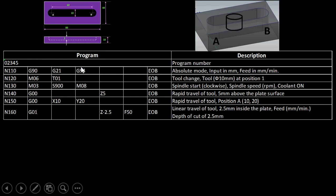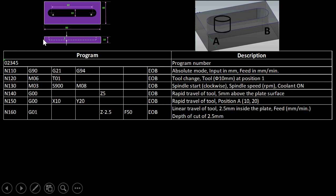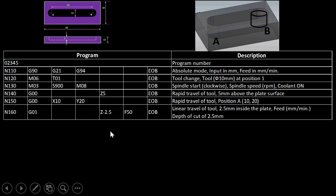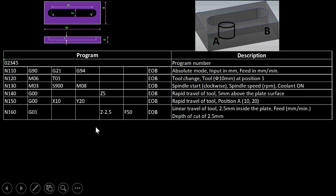G01 is used for linear interpolation, meaning linear travel of the tool while cutting is taking place. Since Z00 is the work surface reference, below it is negative. We write Z-2.5 for the 2.5 mm depth of cut. F50 sets the feed to 50 mm per minute. The cutter now enters the workpiece 2.5 mm from the top surface.